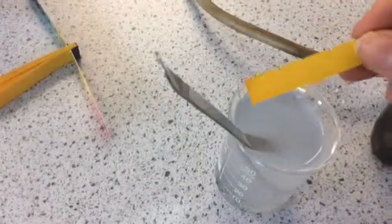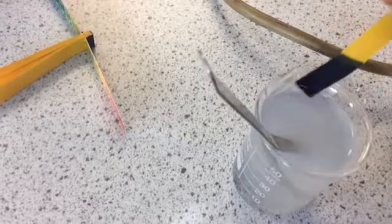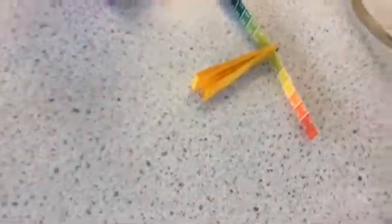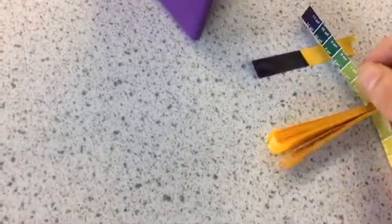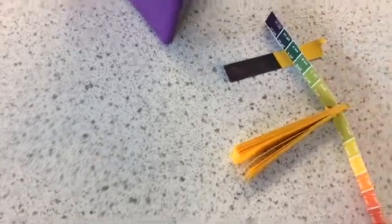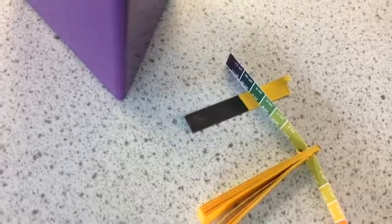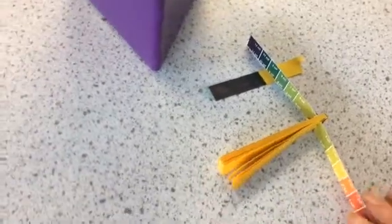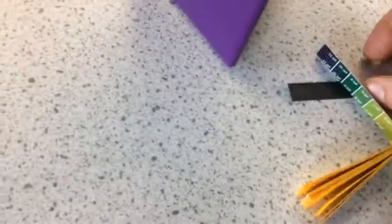So we are going to try putting our universal indicator paper in. Perfect. And you can see it's gone blue. And if we match it up here, it's a bit difficult to see the color on the iPad, but actually it's more of a really dark green, so pH 9, possibly 10, rather than this blue, which is the strongest.